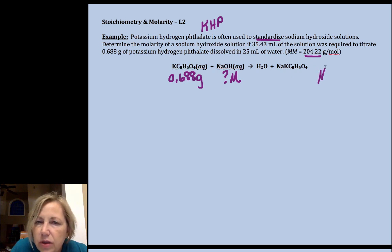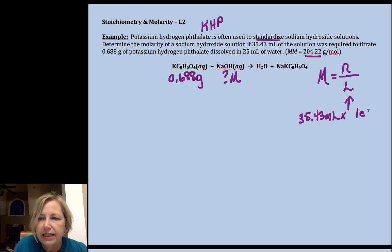To find molarity of sodium hydroxide, we need two pieces of information: we need moles and we need liters of the sodium hydroxide solution that was used. Now we have the liters. We can convert 35.43 milliliters to liters by multiplying by its appropriate conversion factor. I caution you against shifting decimal places.